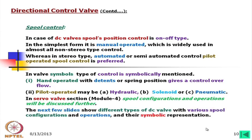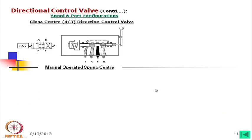Here we have a closed-center 4 by 3 directional control valve. Looking at this symbol, both sides have springs — this is called spring-centered, meaning when the valve is left un-operated, it automatically returns to the neutral position. If there is a spring on one side only, it is called spring-return. In the symbol the word 'man' indicates it is manually operated, with a lever used to push the spool left or right.